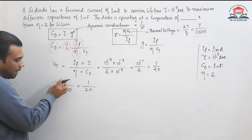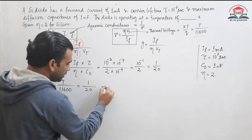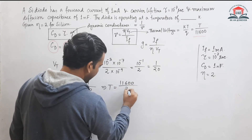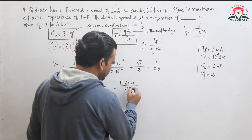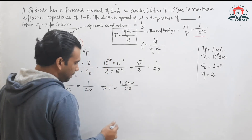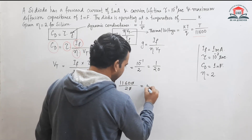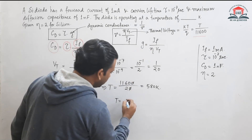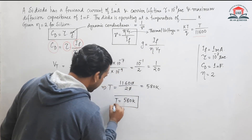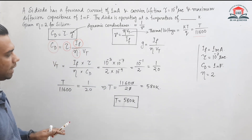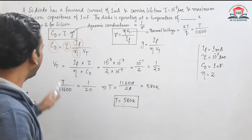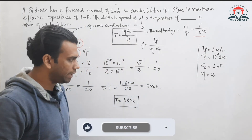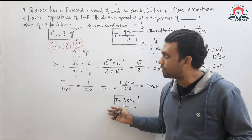From this equation, we can find the operating temperature T. T equals 11600 divided by 20, which gives 580 Kelvin. So the operating temperature of the diode is 580 Kelvin. This is how we can calculate the operating temperature from the diffusion capacitance data, forward current, and minority carrier lifetime.